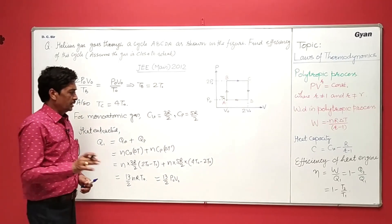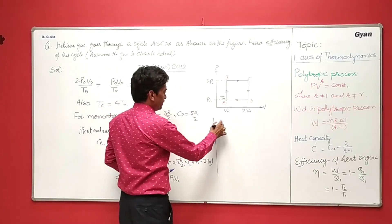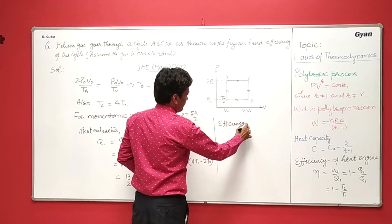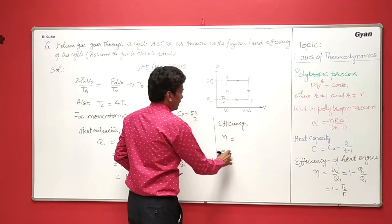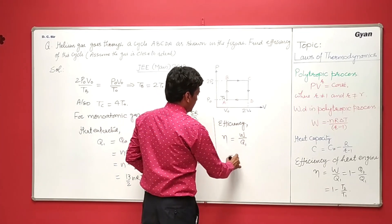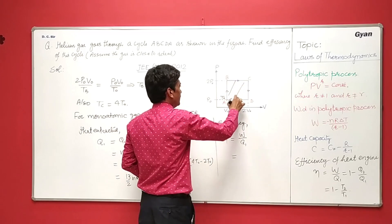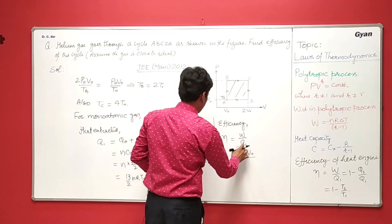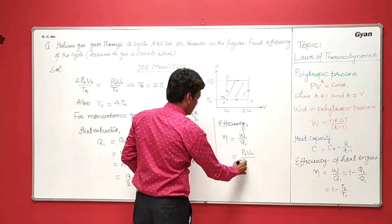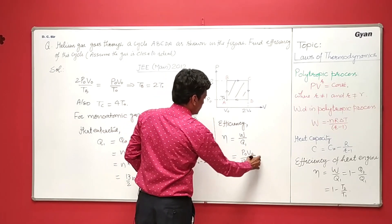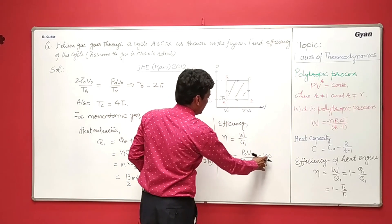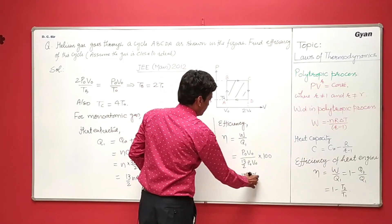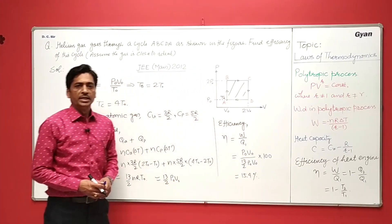Now to get efficiency, so efficiency of cycle, eta is equal to work done divided by heat absorbed. Here the work done in the cycle, the area of this, that equals to P0V0, and the heat absorbed is 13 by 2 P0V0. To get the percentage, multiply by 100, so it will be 15.4 percent. Thanks for watching the video.